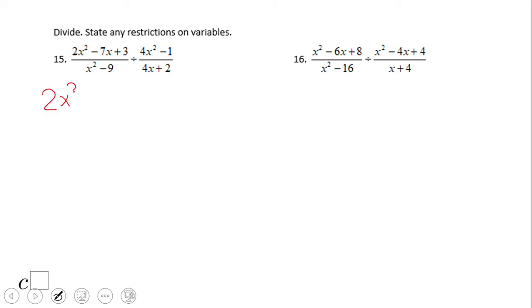(2x²-7x+3)/(x²-9) times (4x+2)/(4x²-1). Now let's take a look at the factor form, and some of them are pretty easy. Like x²-9 is (x-3)(x+3), difference of squares.